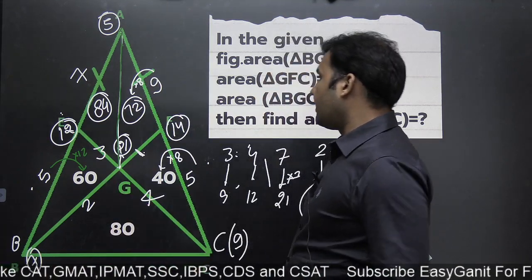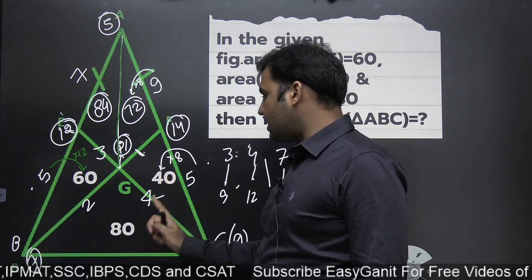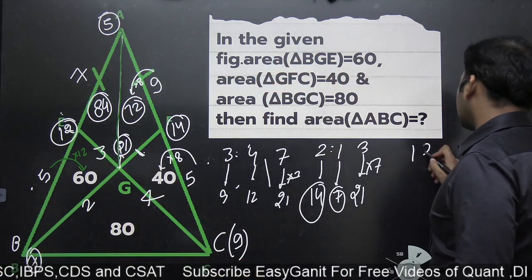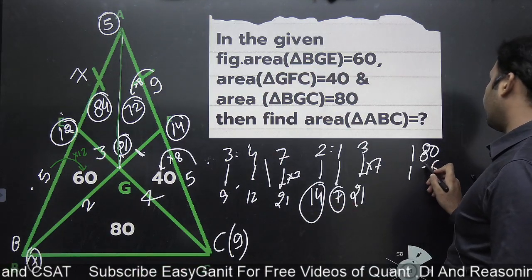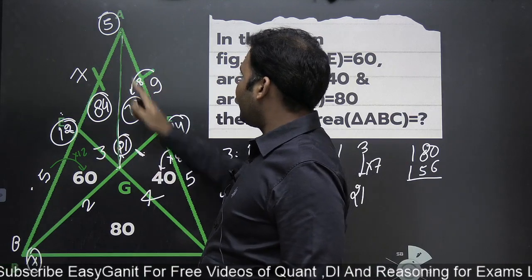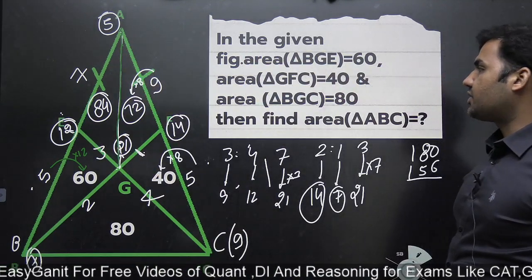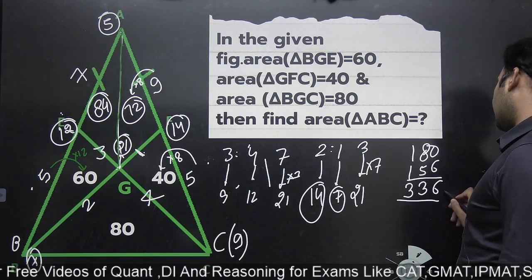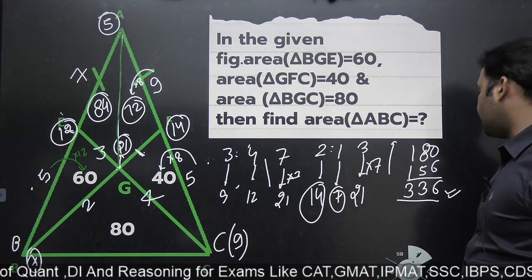The question is solved. The total area of triangle ABC is: 60 + 40 + 100 + 80 + 84 + 72. Let's add: 60+40 = 100, 100+80 = 180, 180+84+72 = 336. So the area of triangle ABC is 336.